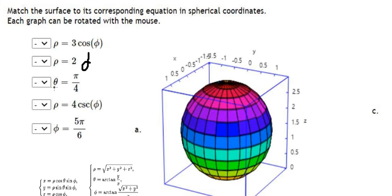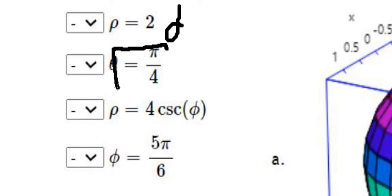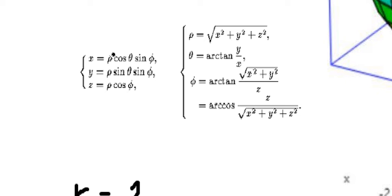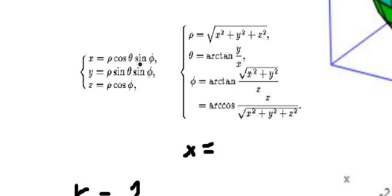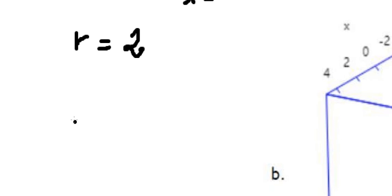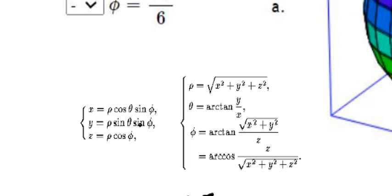Next, we have theta equals pi over 4. If we look carefully at this, we put pi over 4 into cosine theta and sine theta. We see that x equals rho multiplied by sine phi multiplied by cosine theta, and y equals rho multiplied by sine phi multiplied by sine theta. We know that cosine of pi over 4 equals sine of pi over 4, and that's the square root of 2 over 2. If they have the same x and y, that means when x equals negative 2, y equals negative 2, and so on.